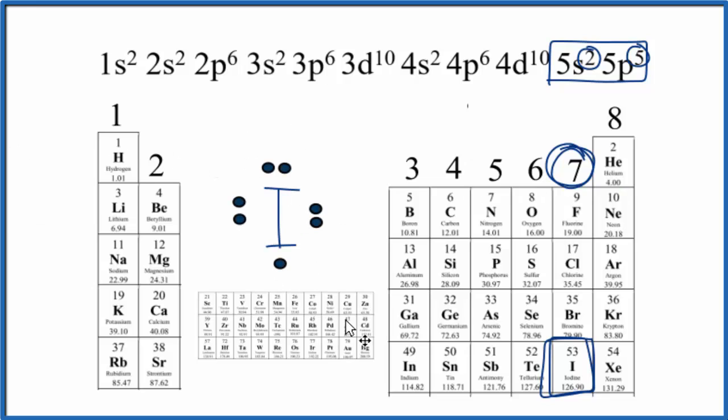So if we look at the periodic table, the pattern on the periodic table for valence electrons, or the electron configuration, both tell us that iodine has seven valence electrons. This is Dr. B. Thanks for watching.